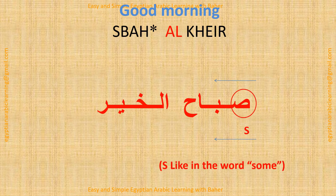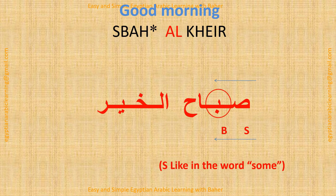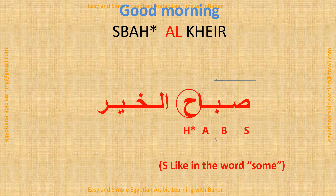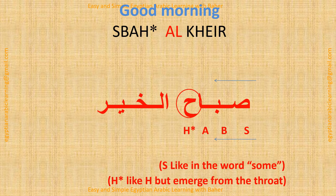So, 'Sabah al-kheer.' The first letter is Saad, pronounced like S in the word 'sun.' Second letter is Ba, like B. Third is Alif, pronounced like A. The last letter in the word 'Sabah' is Ha, pronounced like H but it emerges from the throat — like if you're clearing your throat or coughing.